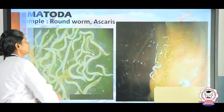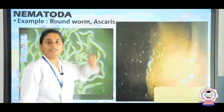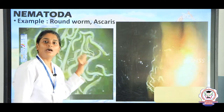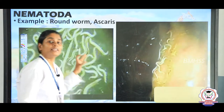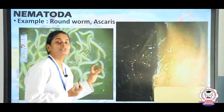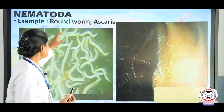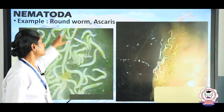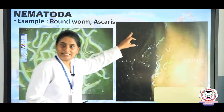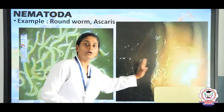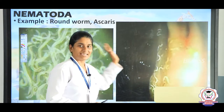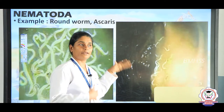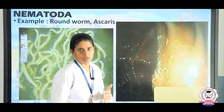The fourth phylum is Nematoda. 'Nema' means thread. These animals are thread-like structures and round in shape. Examples are roundworm and Ascaris. Even these are parasitic animals, though sometimes they are free-living also.